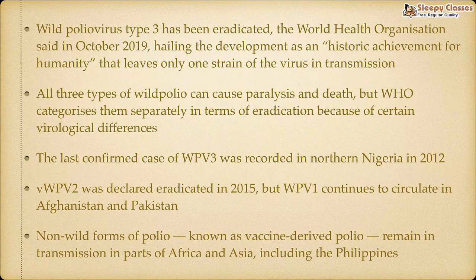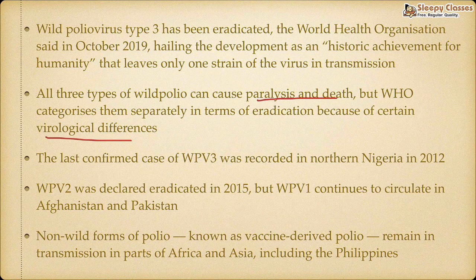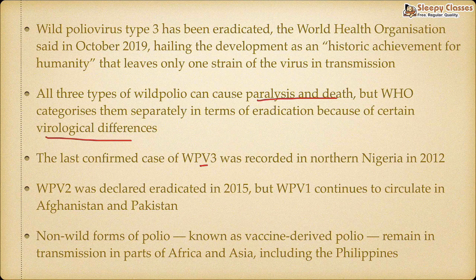The wild poliovirus type 3 strain was recently declared eradicated by the WHO in October 2019, which turned out to be a historic achievement for humanity. Wild poliovirus type 3 can cause paralysis and death. WHO has categorized polioviruses based on virological differences into type 1, 2, and 3. The last confirmed case of wild poliovirus type 3 was recorded in northern Nigeria in 2012, after which WHO declared it eradicated.